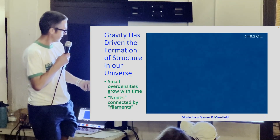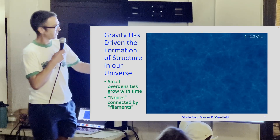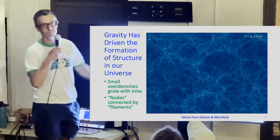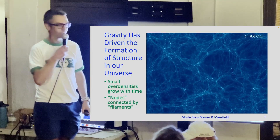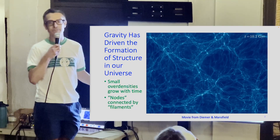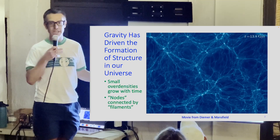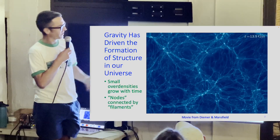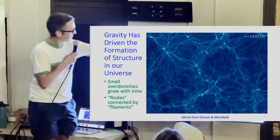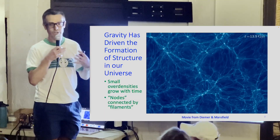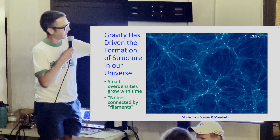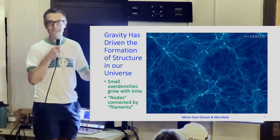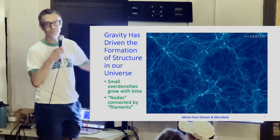To put this in context, I'm showing a movie of the global structure of the universe, starting from T equals zero and moving forward. The universe is about 13 billion years old, so that's where it stops. Through gravity, small over-densities in the early universe grow and get bigger over time. Eventually you get to the present-day universe, with bright spots called nodes — the largest aggregations of matter — connected by long, thin structures called filaments.